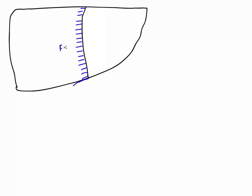Here we have the falciform ligament. Running in its free edge — the inferior limit of the falciform ligament, the part passing towards the anterior abdominal wall — it is slightly thickened. This thickening is due to the ligamentum teres, which is a remnant of an embryological structure known as the umbilical vein. This allowed blood to pass from the mother's placenta into the developing fetus. In the adult, it is fibrosed into the ligamentum teres.